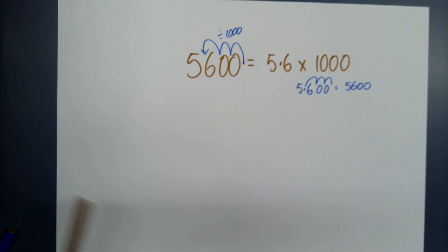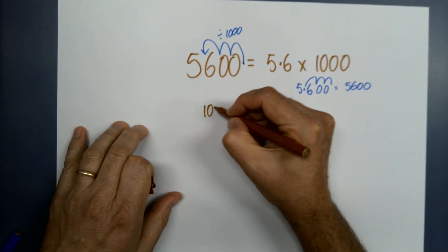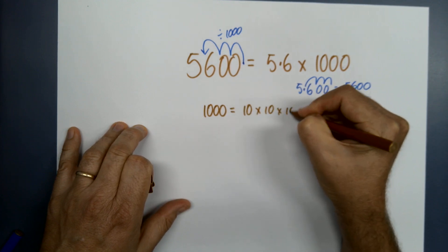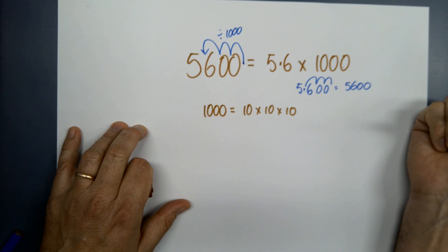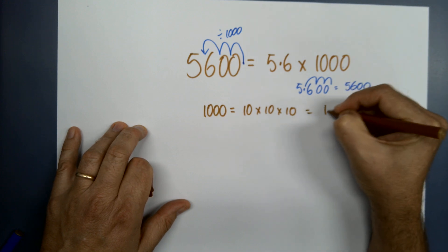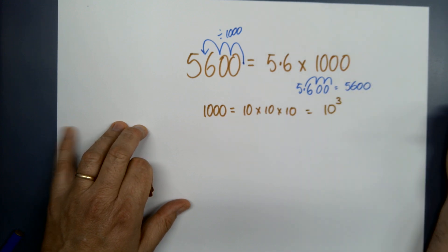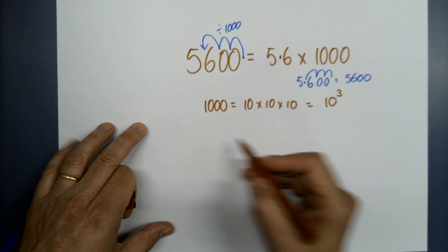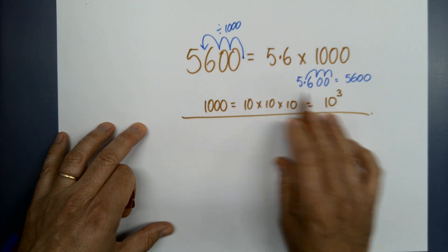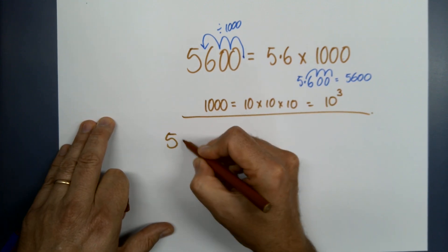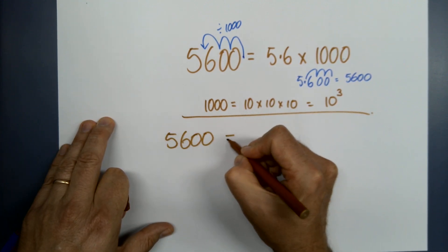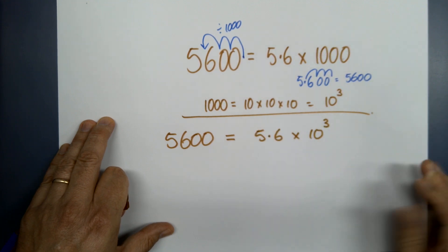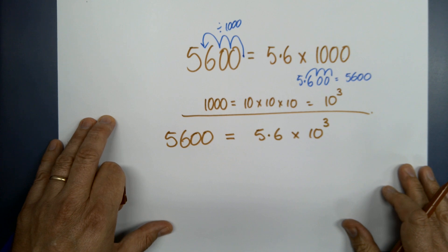But what's another way of writing a thousand? Well, a thousand is ten by ten by ten, which is also ten cubed, or ten to the power of three. So going back to the beginning: five thousand six hundred can be written as 5.6 times ten to the power of three. That is scientific notation.